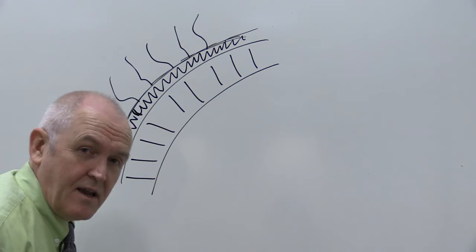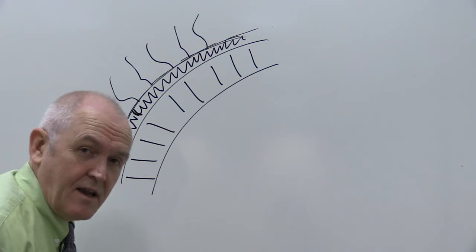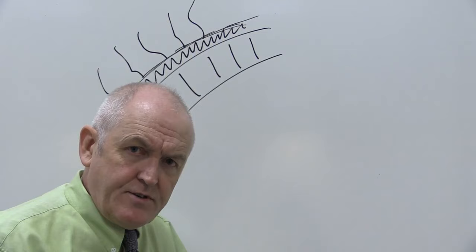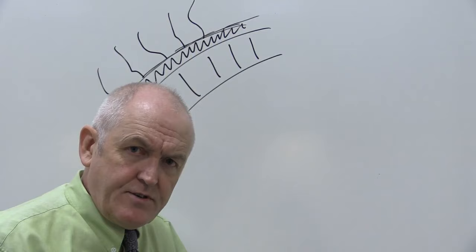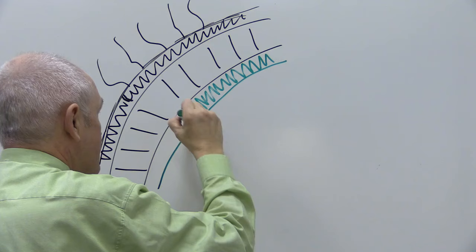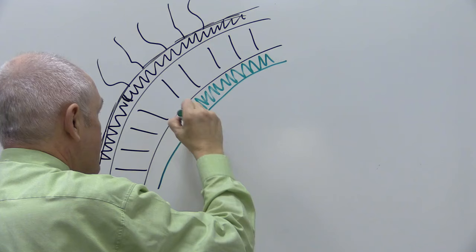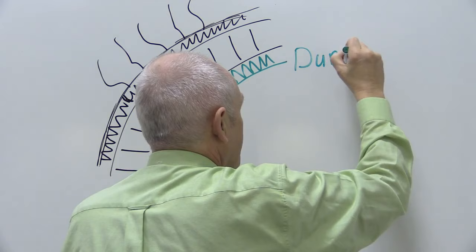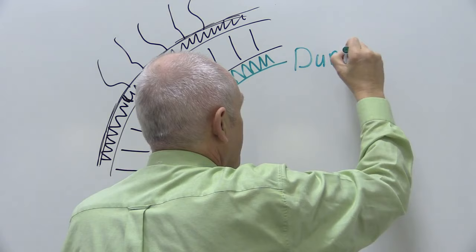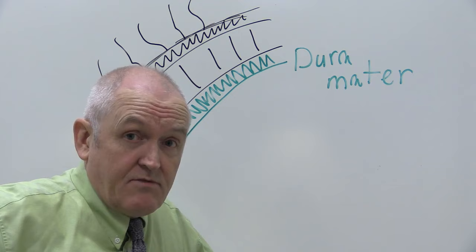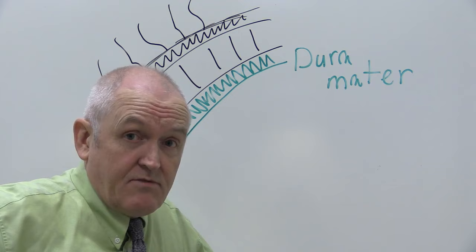Immediately under the bone of the skull there's a thick layer of fibrous tissue. I've drawn it a little thicker than it is to scale, but there's a nice thick layer of fibrous tissue, and this is called the dura mater. Mater is Latin for mother. This layer and these layers we're going to be considering are the mother of the brain, if that makes any sense.